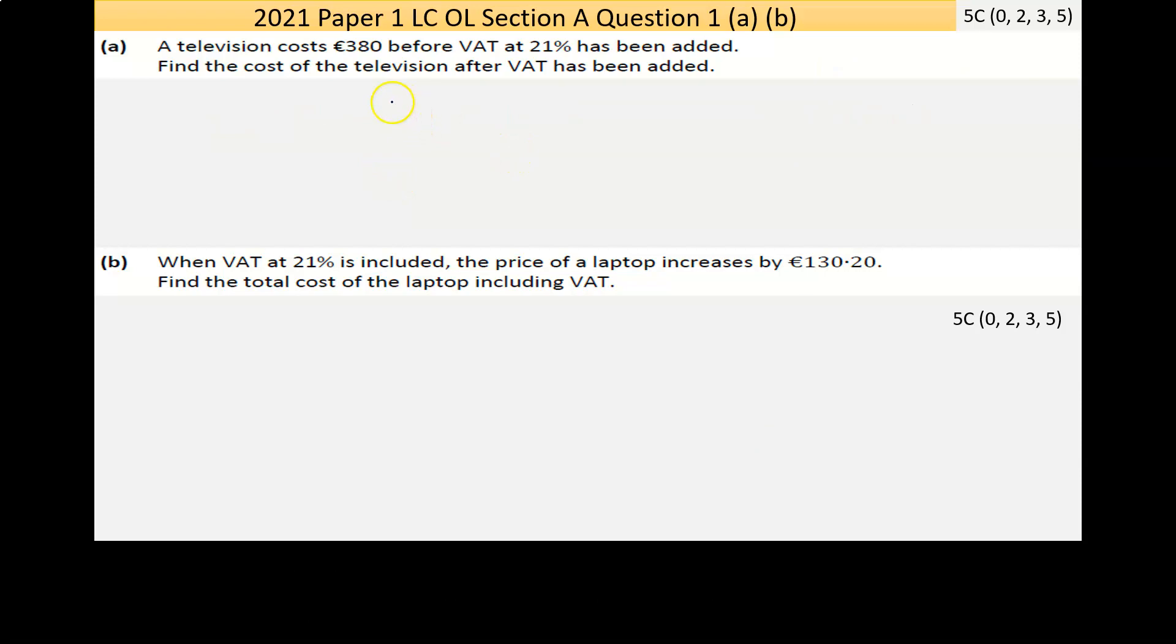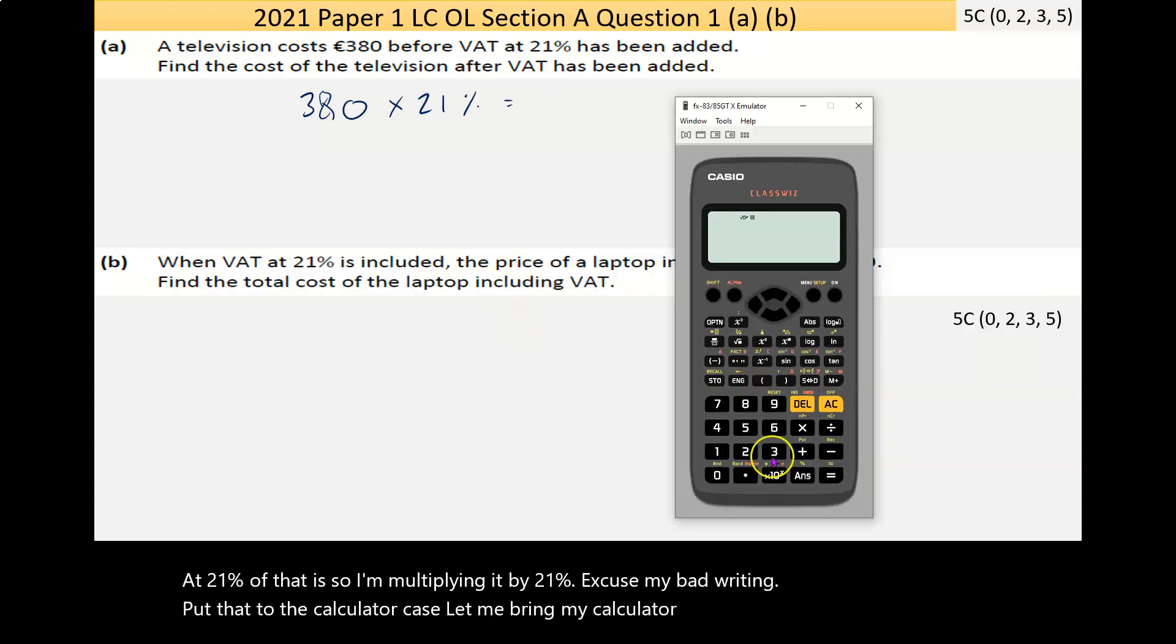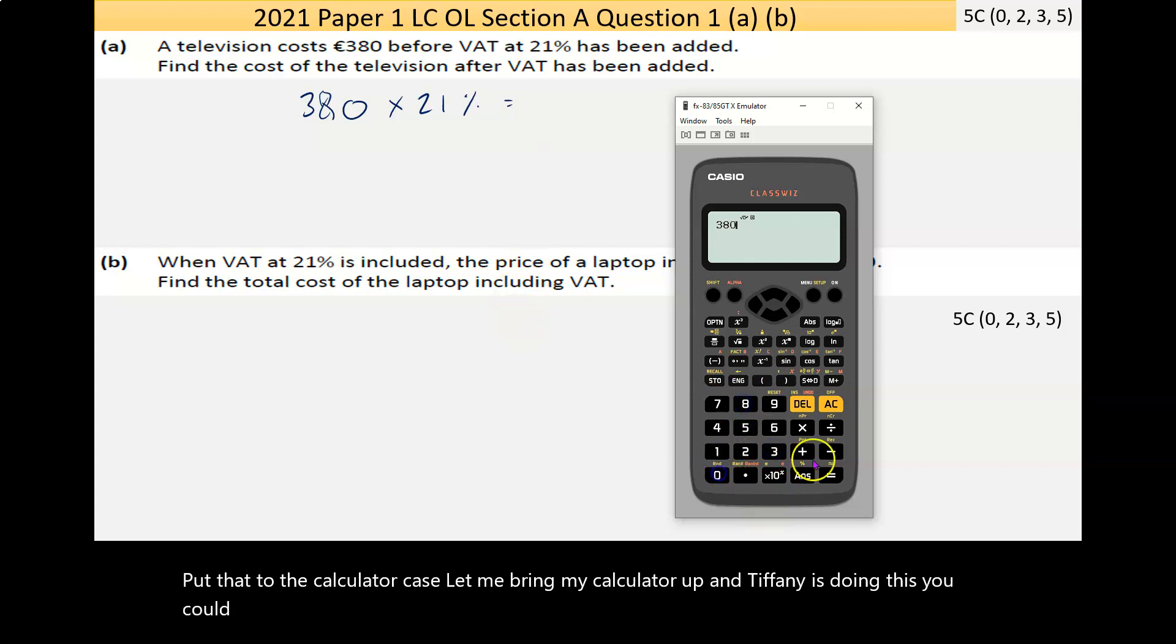A more standard way of doing this would be to go: the €380, I want to find out what 21% of that is, so I'm multiplying it by 21%. Let me bring my calculator up. A different way to do this, I could go €380 multiply it by 21 over 100, which gives me the number 79.8.